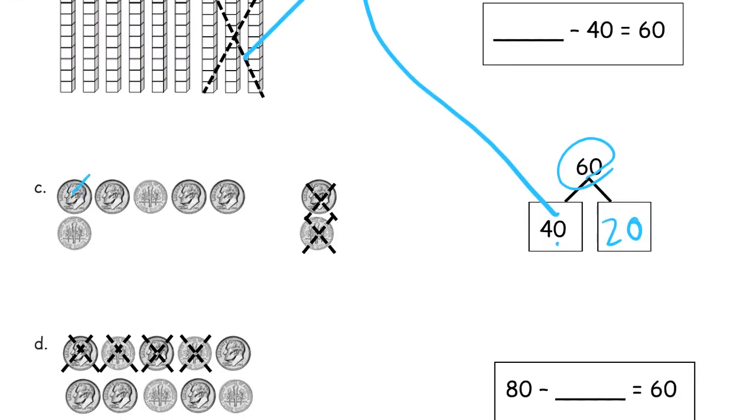These are dimes. And dimes are worth 10 cents. So these are 10, 10, 10, 10, 10, 10. That's six tens, so that's 60. And then these here are also dimes. That's two more tens, that's 20. So we have parts of 60 and 20. And the whole thing together is, if this is 60, we've got 70, 80. So the whole is going to be 80.